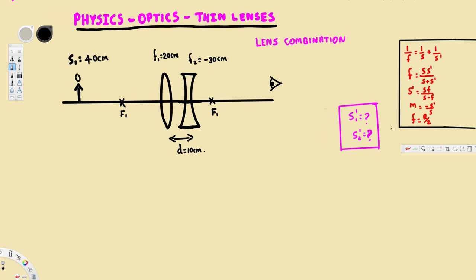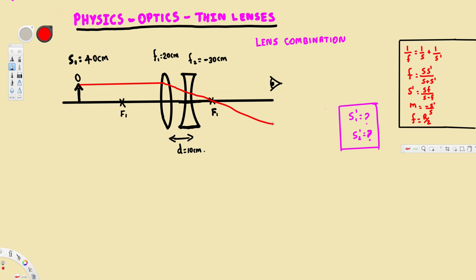Before we do this mathematically, let's draw the ray diagram. First, a ray going parallel to the normal hits the converging lens and passes through the focal point. Then another ray goes through the focal point and after hitting the lens goes parallel to the normal. Wherever these two lines meet, that is the image distance we are trying to find.